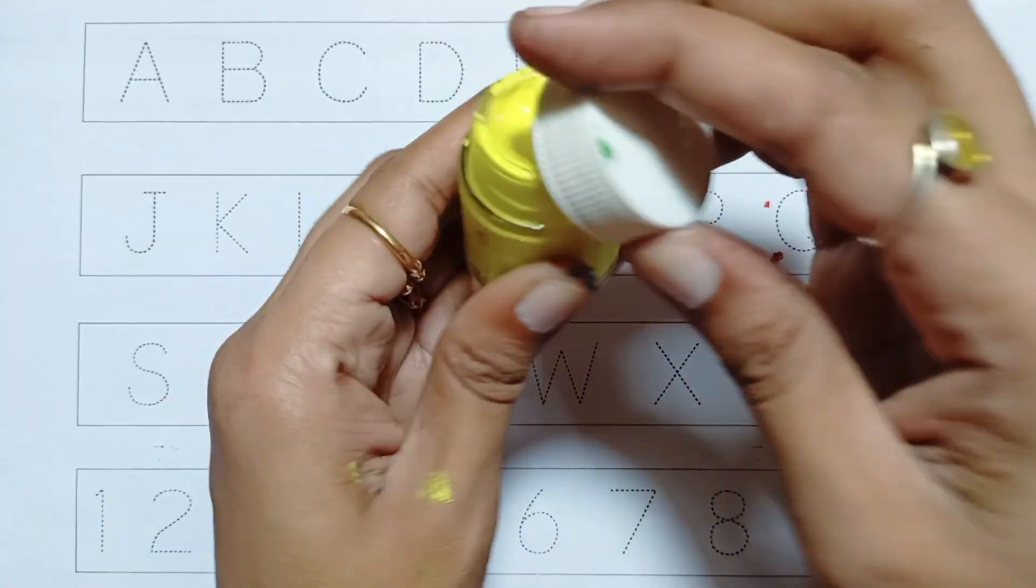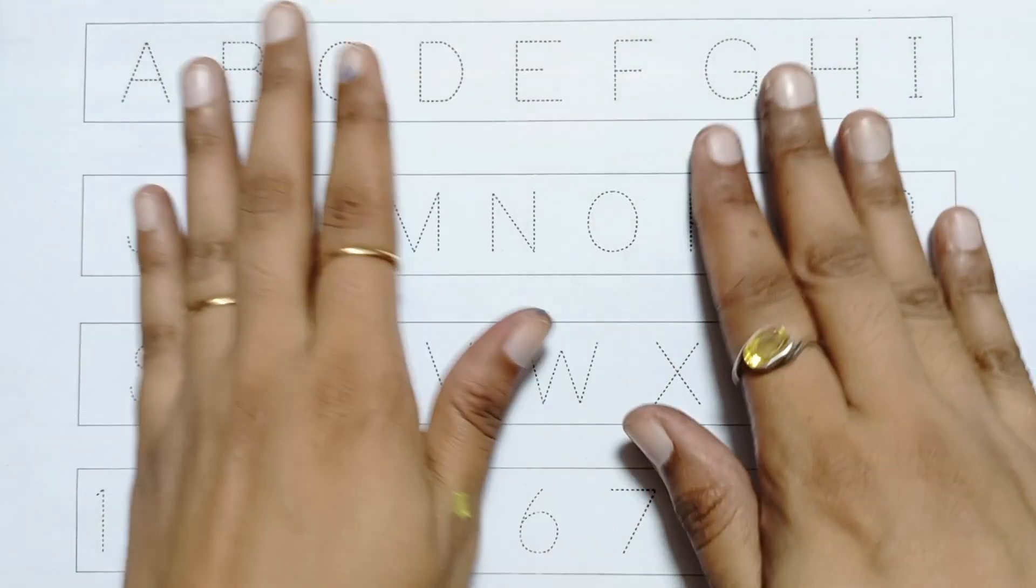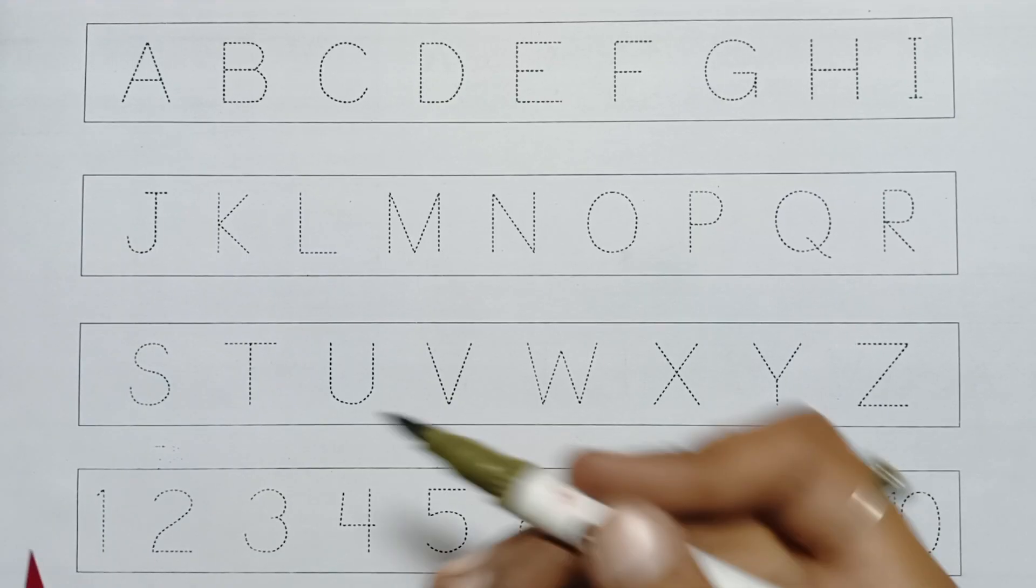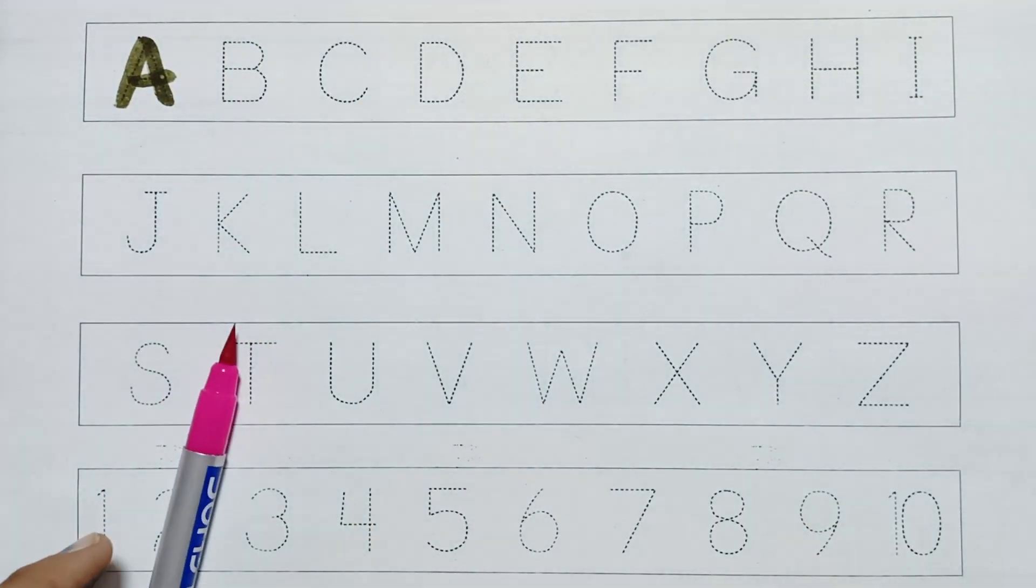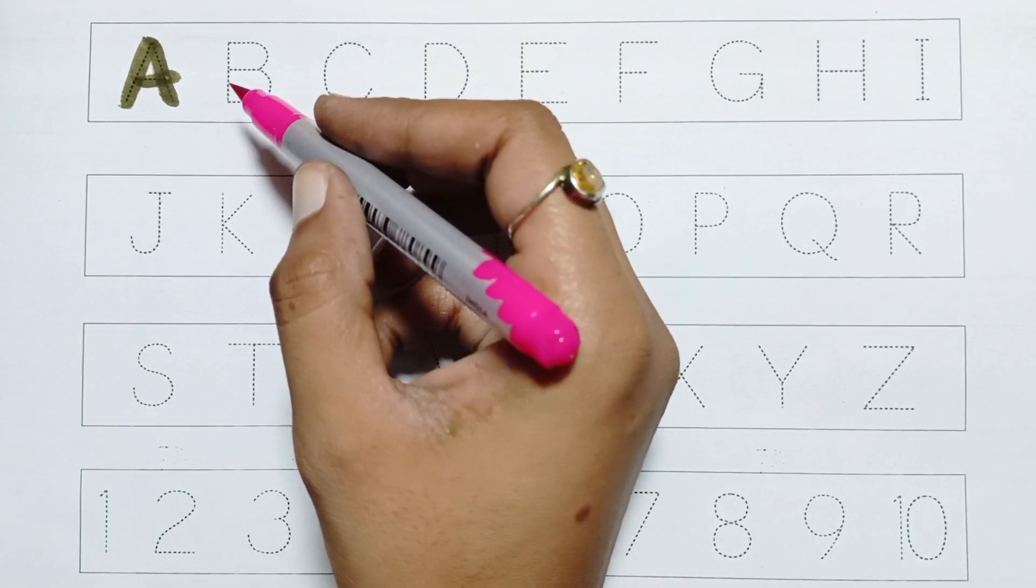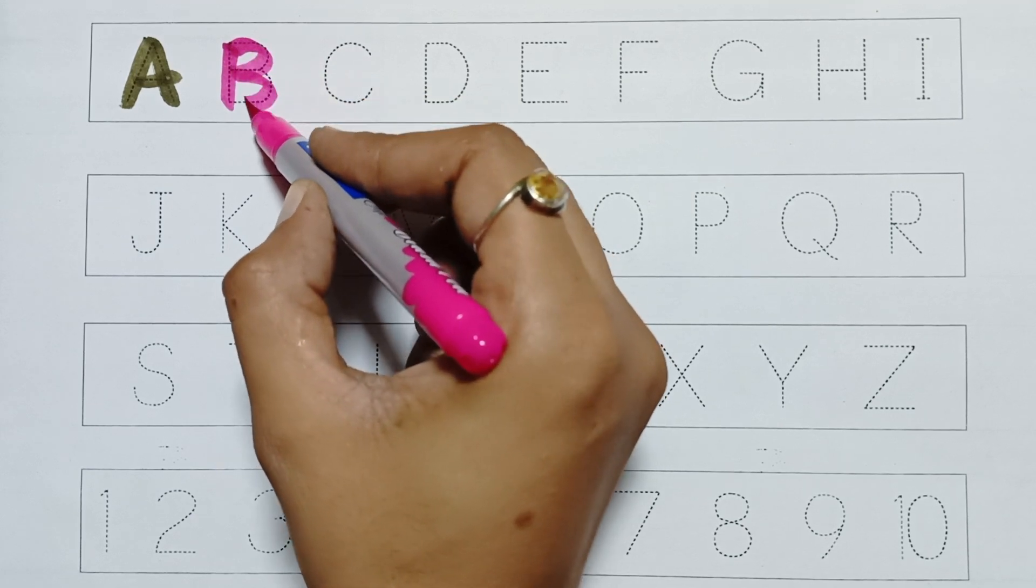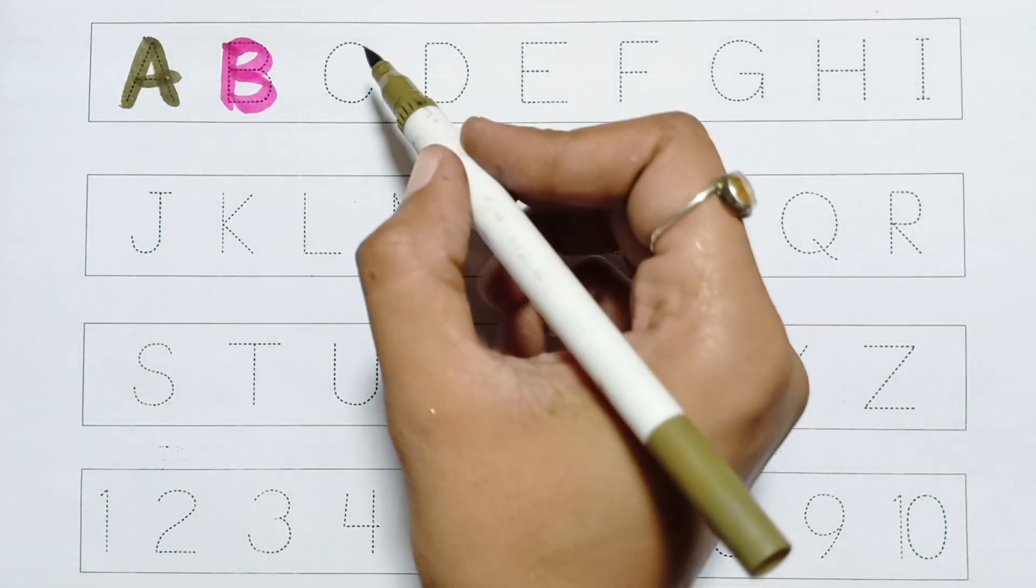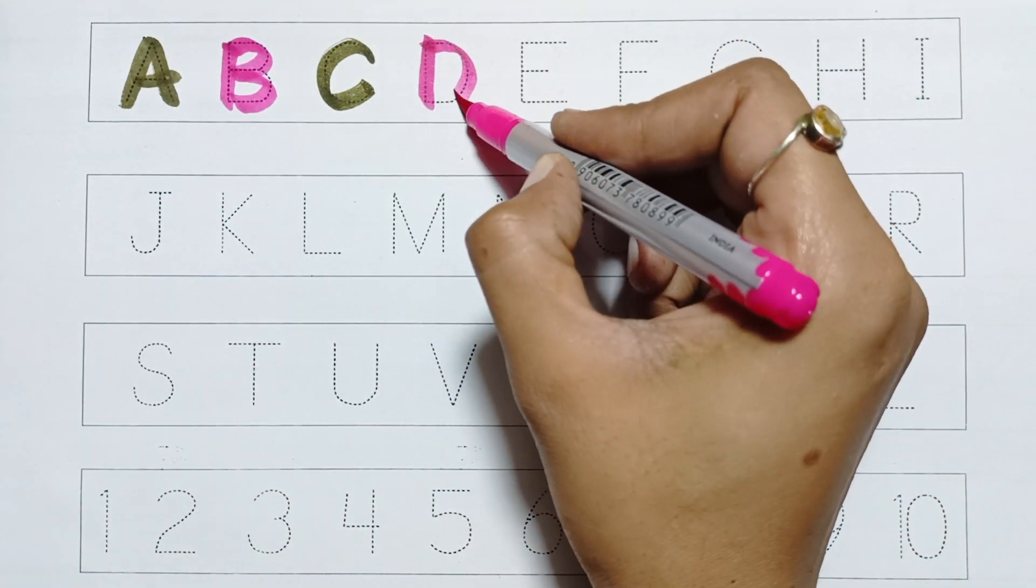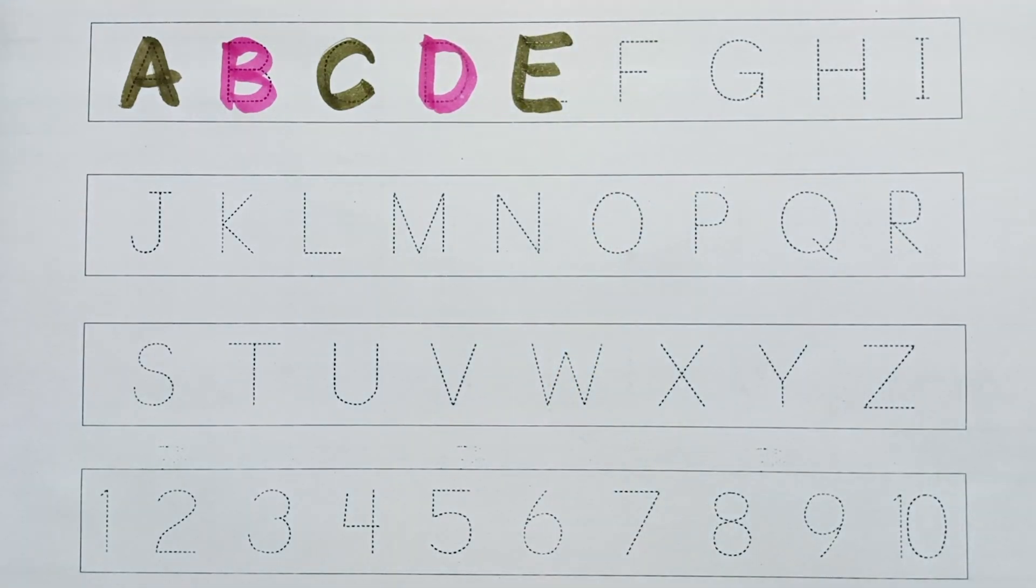A, A for Apple. B, B for Bowl. C, C for Cat. D, D for Dog. E, E for Elephant.